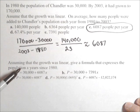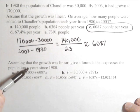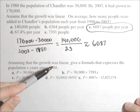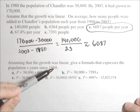Now, again, assuming the growth is linear, find a formula that expresses the population with x being in years since 1980. So that means x equals zero is 1980.